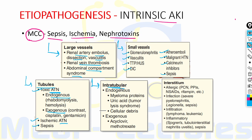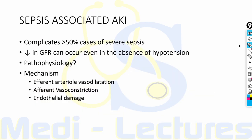Intratubular obstruction can cause intrinsic AKI due to endogenous substances like myeloma proteins, uric acid in tumor lysis syndrome, and cellular debris, or exogenous drugs like acyclovir and methotrexate. Diseases involving the interstitium include allergic reactions, infections, infiltration, and inflammatory conditions.